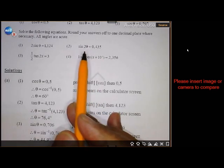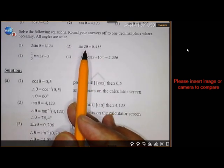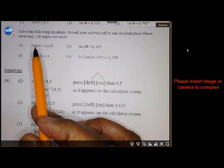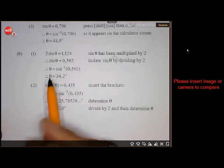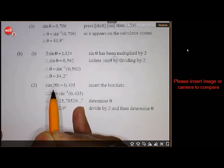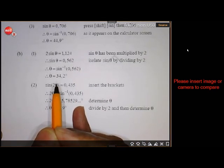Sine of 2 theta. Take note, the difference is 2 sine theta. This is sine of 2 theta, so it's different. So this one, 2 theta. So you don't divide by 2. It stays 2 theta.